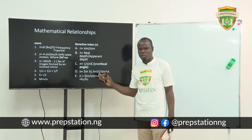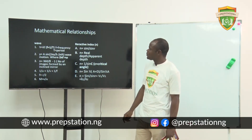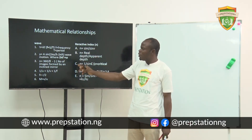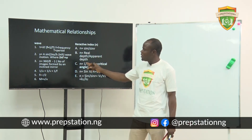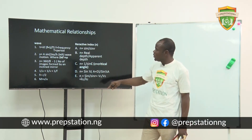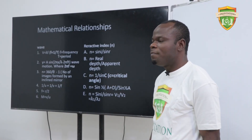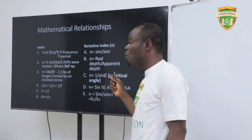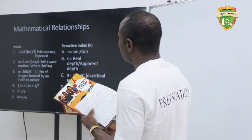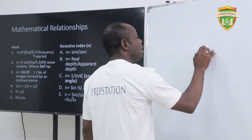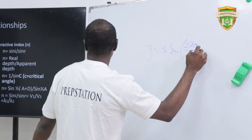Number two is the wave motion equation: Y = A sin(2πx/λ − 2πft), where A is the amplitude, 2πx/λ relates to the wavelength, and 2πf represents angular velocity. For example, if given Y = 5 sin(2πx/λ − 2πft) and asked to determine the amplitude, you compare it to the standard equation. The amplitude is simply 5, and if the units are in centimeters, the amplitude is 5 cm.